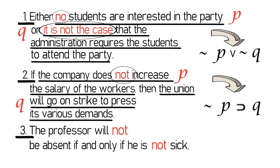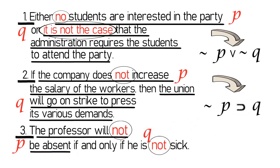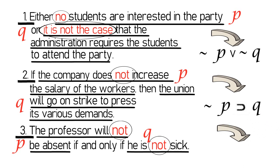Now, in example number 3, both component statements contain a negation sign NOT. Thus, when symbolized, both component statements have to be negated. Hence, if we let P stand for 'The professor will not be absent,' and Q for 'He is not sick,' then the statement 'The professor will not be absent if and only if he is not sick' is symbolized as: NOT P, IF AND ONLY IF, NOT Q.